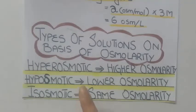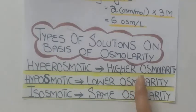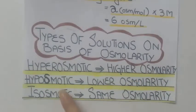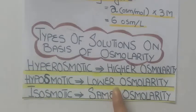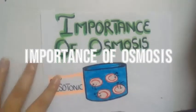On the basis of osmolarity, we have three types of solutions. Hyperosmotic refers to high osmolarity, meaning a greater number of solute particles dissolved per liter of solvent. Hypoosmotic means low osmolarity — fewer solute particles dissolved per liter. And iso-osmotic means the same osmolarity — two different solutions with the same number of solute particles dissolved per liter.